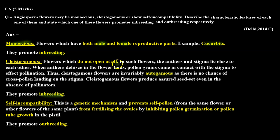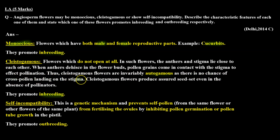Cleistogamous flowers are flowers which do not open at all. In such flowers, the anthers and stigma lie close to each other. When anthers dehisce in the flower buds, pollen grains come in contact with the stigma to effect pollination. Thus, cleistogamous flowers are invariably autogamous as there is no chance of cross pollen landing on the stigma. Cleistogamous flowers produce assured seed set even in the absence of pollinators. They promote in-breeding.